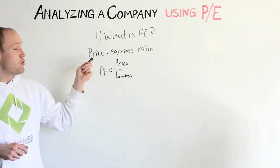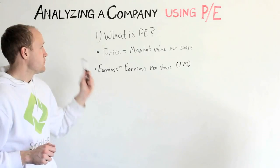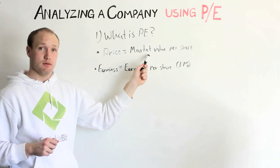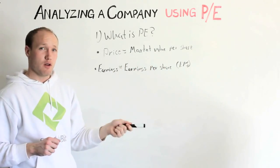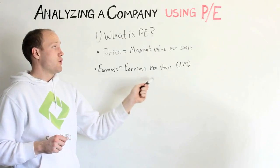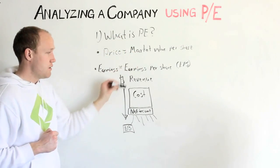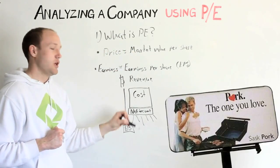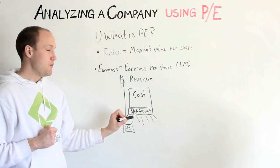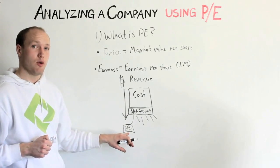The technical term is price-earnings ratio. We take the price divided by the earnings. Price is the market value per share — what you actually pay when you buy a share. For example, you pay $466 for one share of Apple. Earnings, or earnings per share: you look at the revenue coming into a company, then all the costs — marketing, production, etc. You're left with the profit, called the net income, which gets distributed into the number of shares. That is your earnings per share.